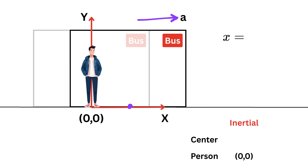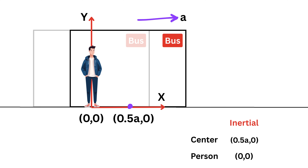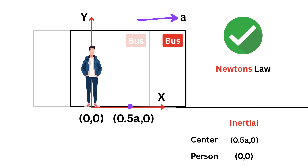However, the bus has acceleration a and it moves forward. Since the motion is from rest, we use x = ½at². After one second the bus center is at x = 0.5a. So from the ground view, the person is still at x = 0 but the bus center is now at x = 0.5a. This makes sense: the person had no force so it stayed in place, but the bus did have a force so it moved. Newton's law works correctly here because we are in an inertial frame.